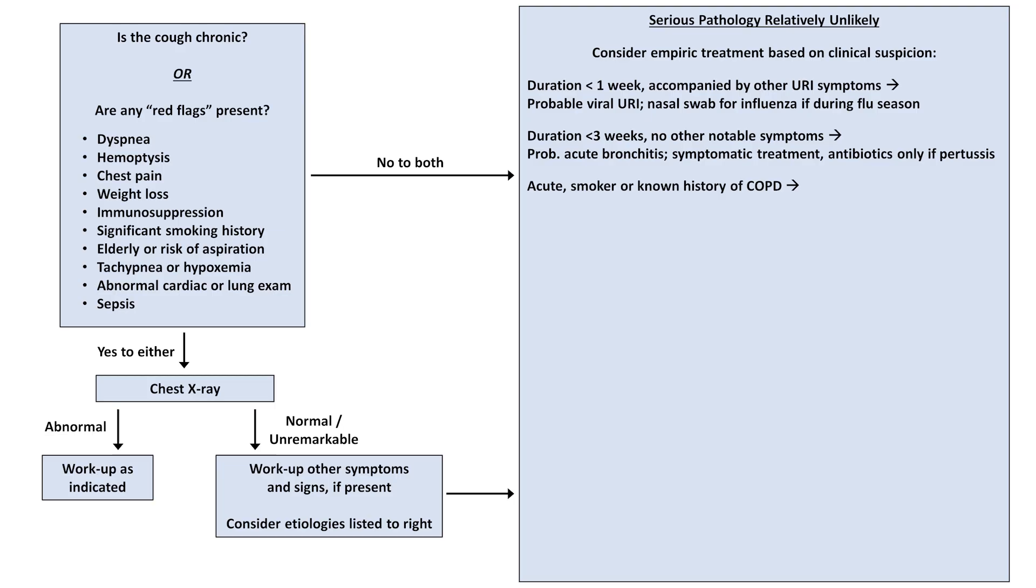If the cough is acute and occurring either in a smoker or in a person known to have COPD, consider a possible COPD exacerbation. If there is no more likely diagnosis, consider empiric treatment with prednisone, inhaled bronchodilators such as albuterol and ipratropium, and plus or minus antibiotics.